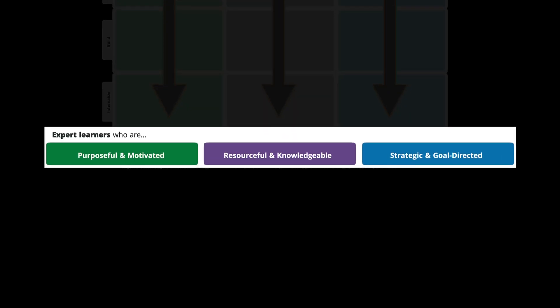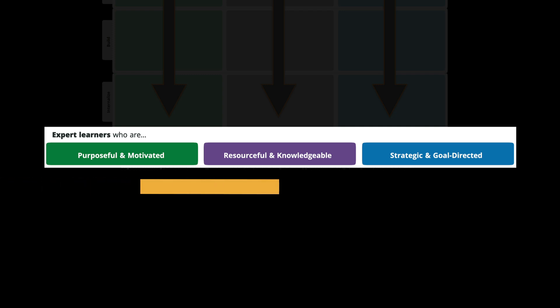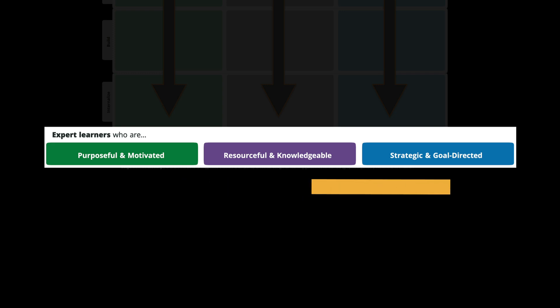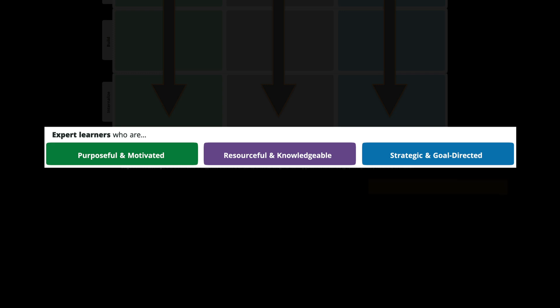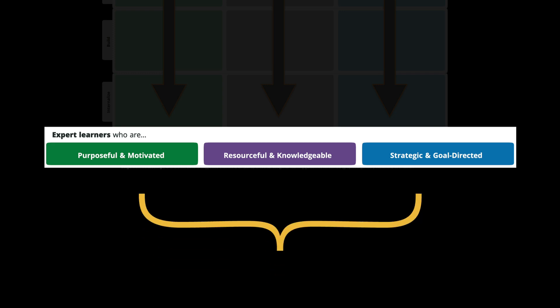These three end goals have a progression to them, with the first being to help each student become full of purpose and motivated, which is really a requirement to then become resourceful and knowledgeable, which is then the foundation that enables them to become strategic and goal-directed learners. If any human achieves all three of those goals, they're kind of really well set for life, no matter what the future holds.